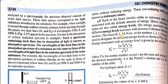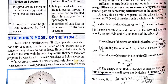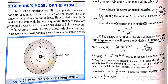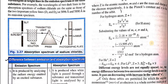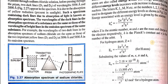The letters K, L, M, N, etc., or the numbers 1, 2, 3, 4, etc., are used to designate the different energy levels as shown in figure 2.28. In the figure, you can see that outside the nucleus we have different orbits where the electrons revolve, and they have different energy levels.